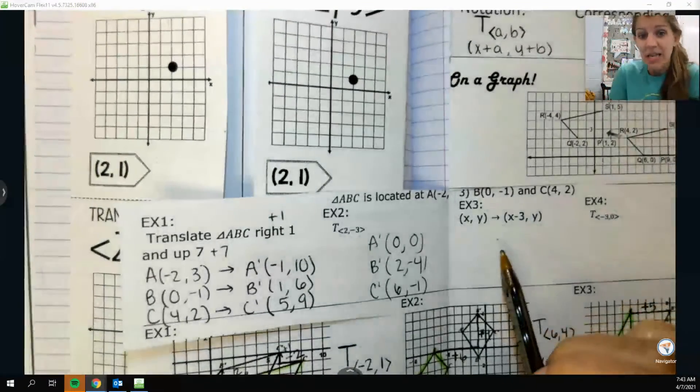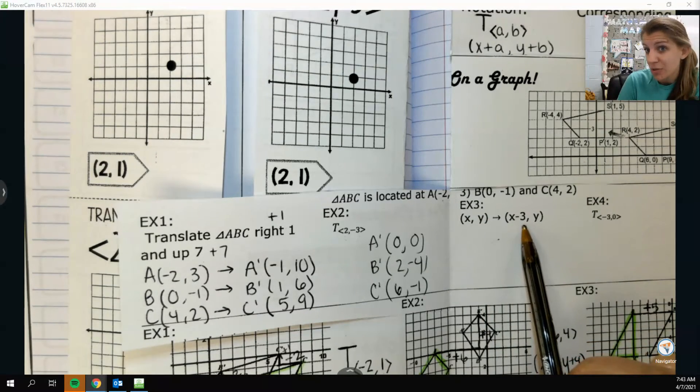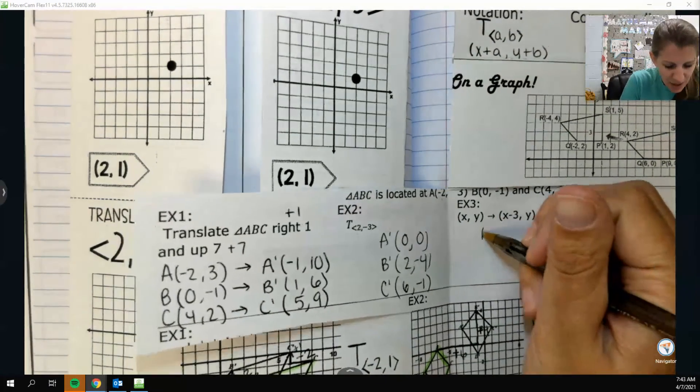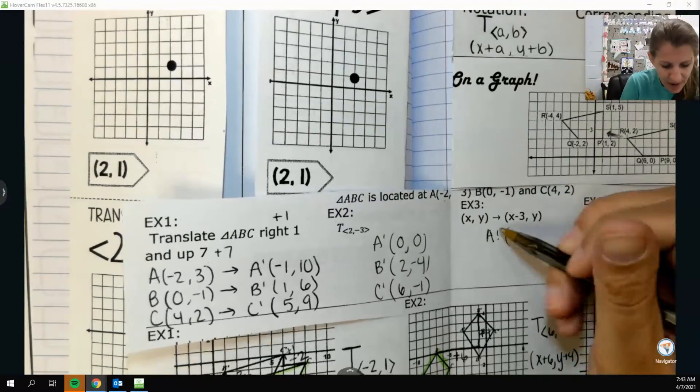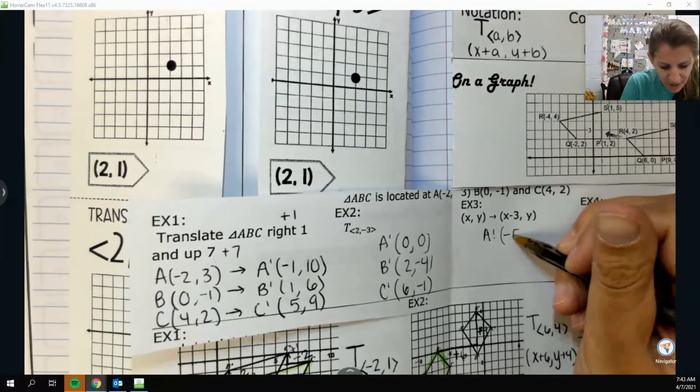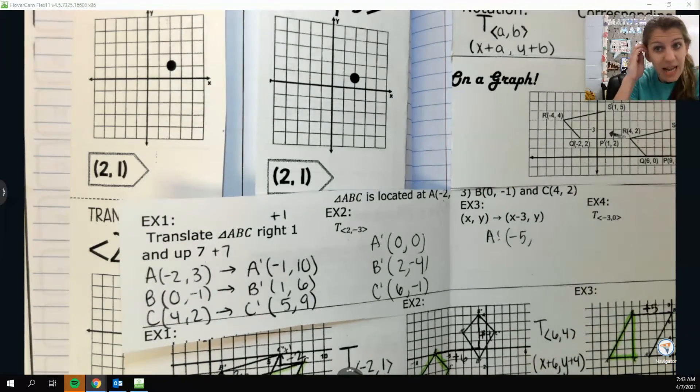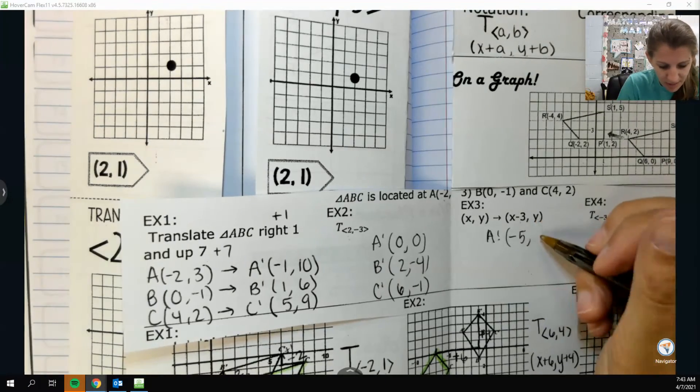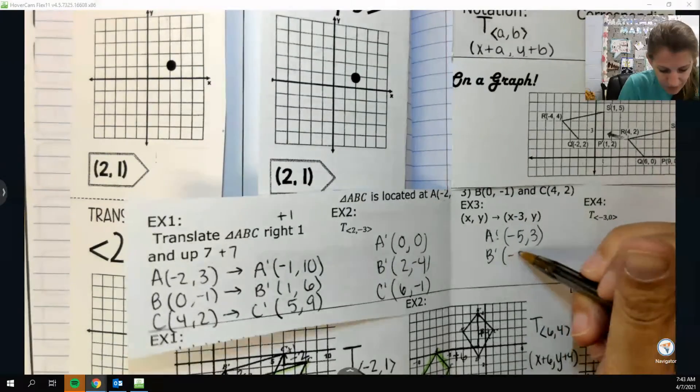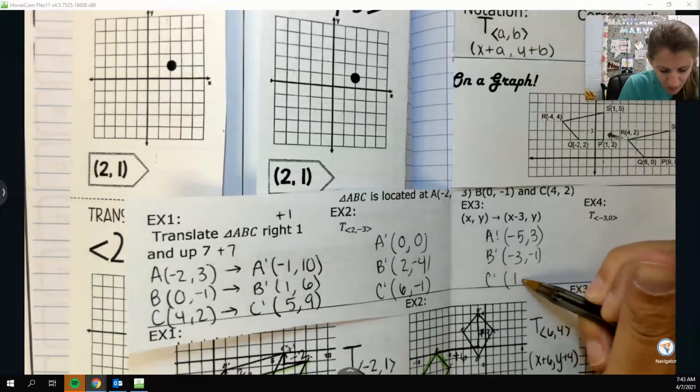This is also a translation. I can tell because they took an original point and they added or subtracted something to it. And whenever we're adding and subtracting stuff, that's a translation. Using those same points, a prime, I'm going to subtract 3 from x, so negative 5. And I'm not going to do anything to y. So this is one that is just sliding to the left. So 3. B prime would be at negative 3, negative 1. And c prime would be at 1, 2.